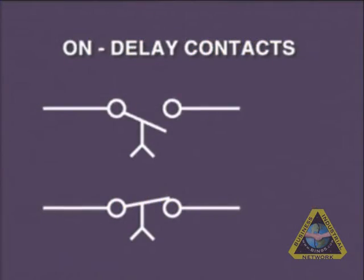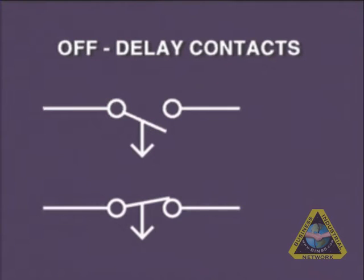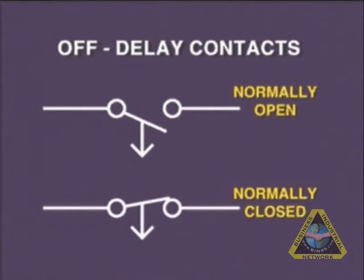The on-delay timer contacts are represented by these symbols for the normally open and normally closed. The off-delay timer contacts are represented by these symbols also for the normally open and normally closed.